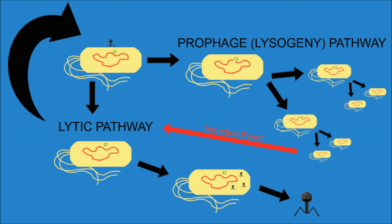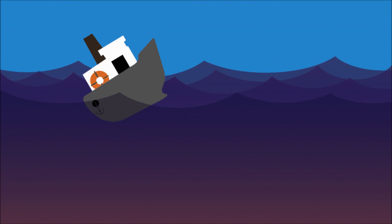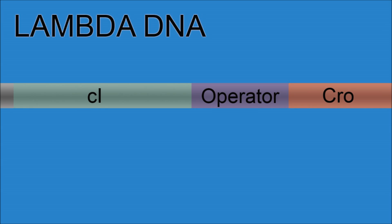At that point, the virus realizes it's on a sinking ship and begins to replicate while there's still time. How does the virus either stay in the prophage state or shift to the lytic state? This is thanks to two genes, C1 and Cro.